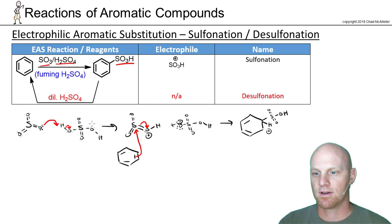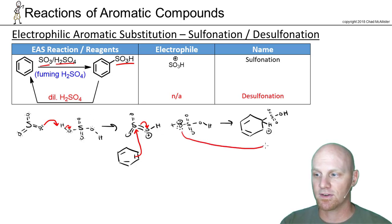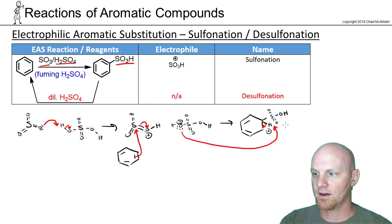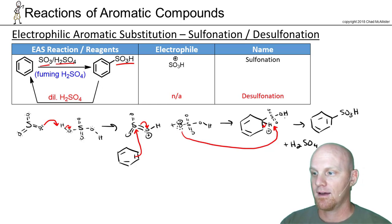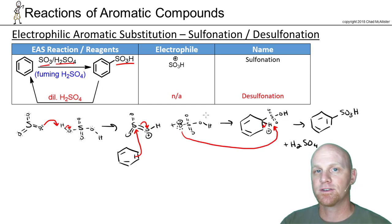Now we've done a nucleophilic attack, and we've got to deprotonate — that's what HSO₄⁻ does. It comes and deprotonates that hydrogen to restore aromaticity back into the ring. Now we've got our SO₃H group attached, and we also get our HSO₄⁻ back as a catalyst. No catalyst should be consumed in a reaction.